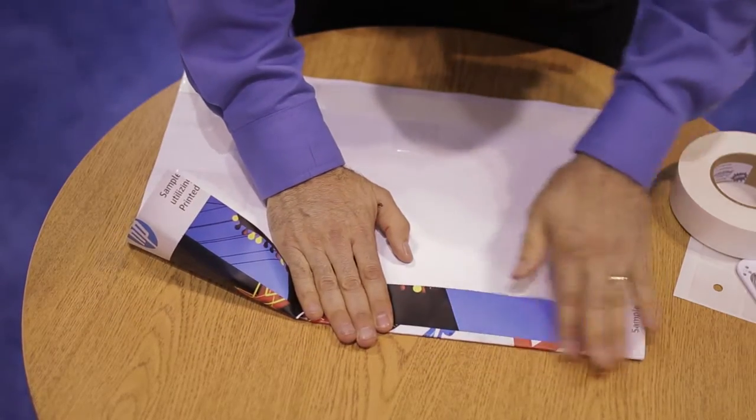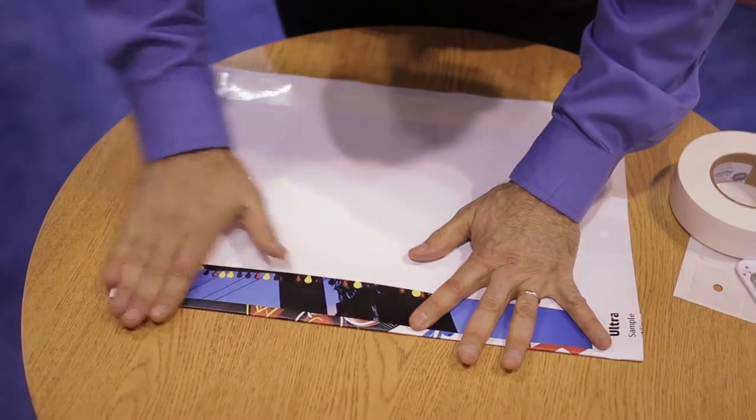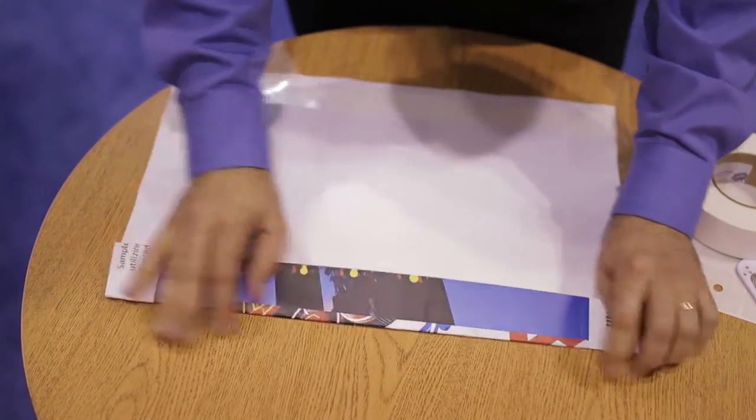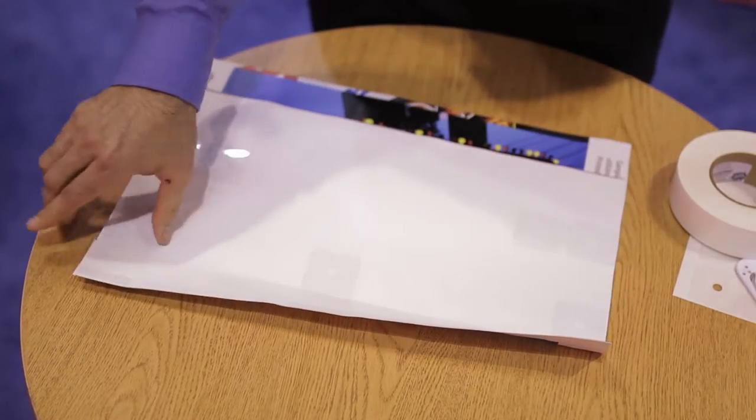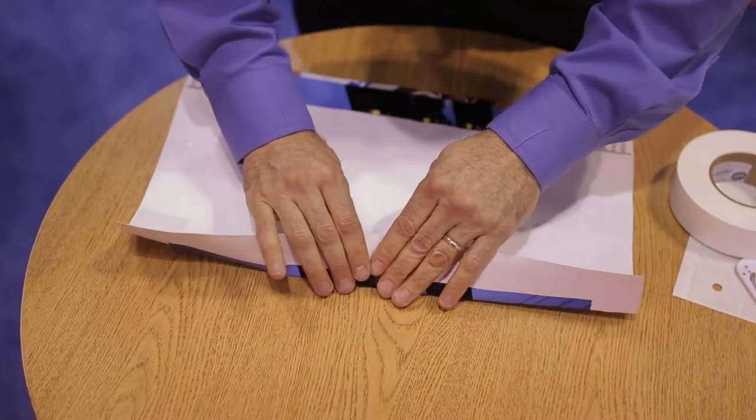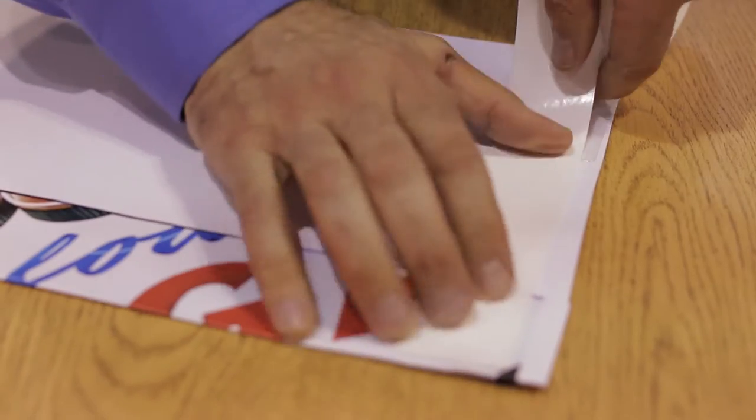One helpful tip at this point is to crease the banner hem before removing the Mega Tape liner. Remove the liner, fold over the hem, and press it down. Now repeat this process along the sides of the banner.